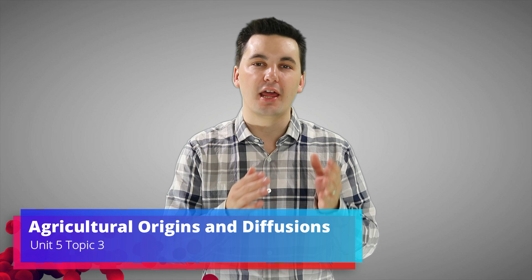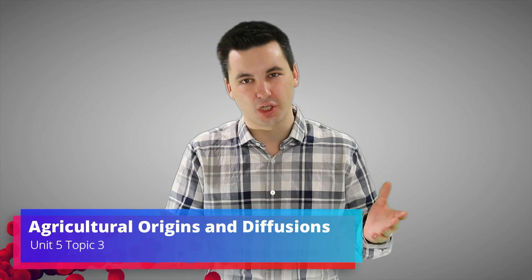Hello there geographers and welcome back to the Mr. Sin channel. Today we're going to be going into unit five topic three. We're going to be looking at agricultural origins and diffusion.